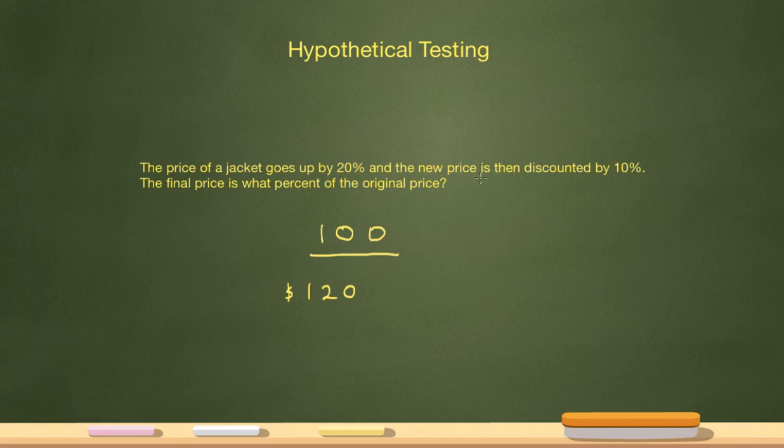Now it's saying the new price, which is $120, is then discounted by 10%. So 10% of 120 is $12. So that's how much the 120 is discounted by. So it'll be 120 minus 12 and I got 12 by doing 10% of 120 and that gives me $108.